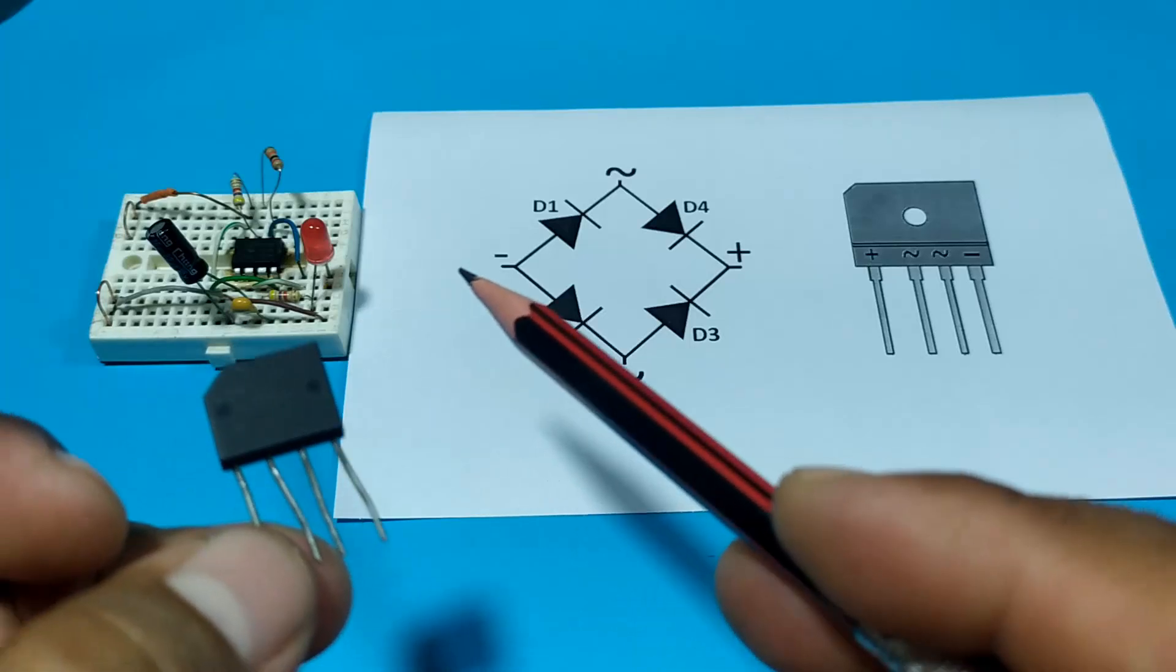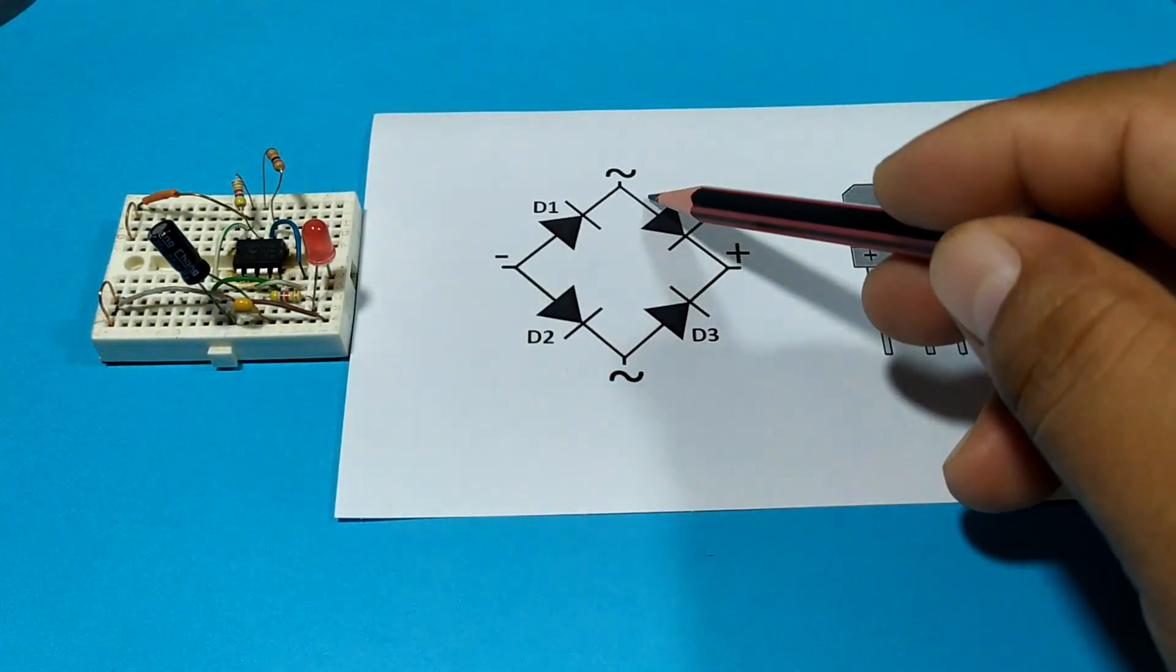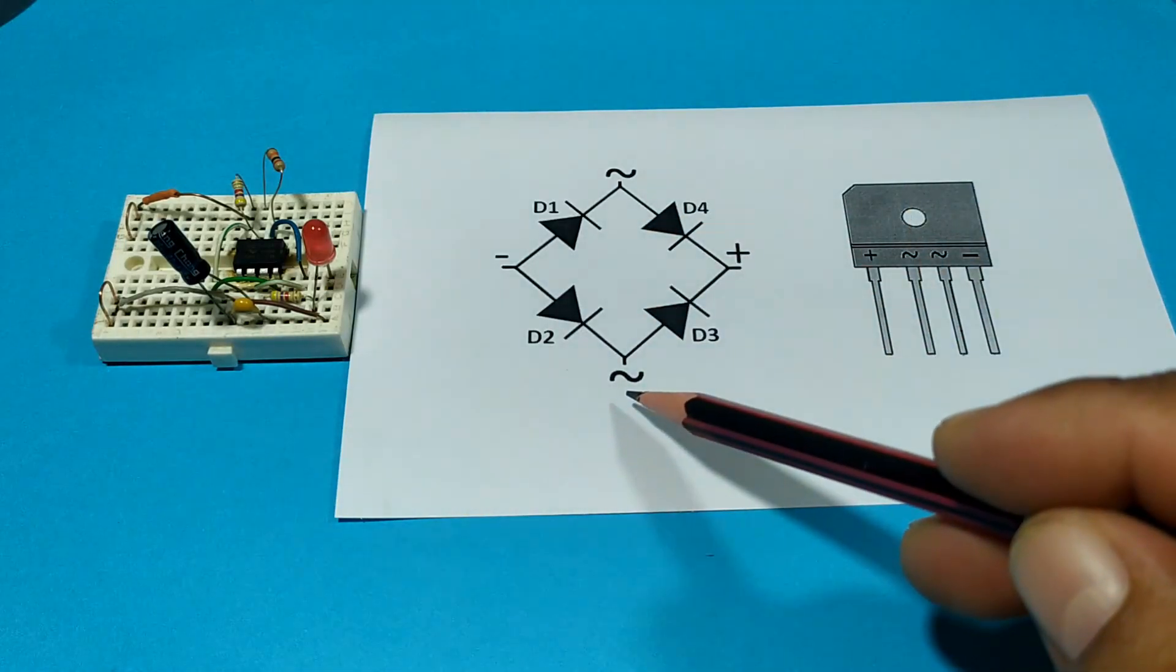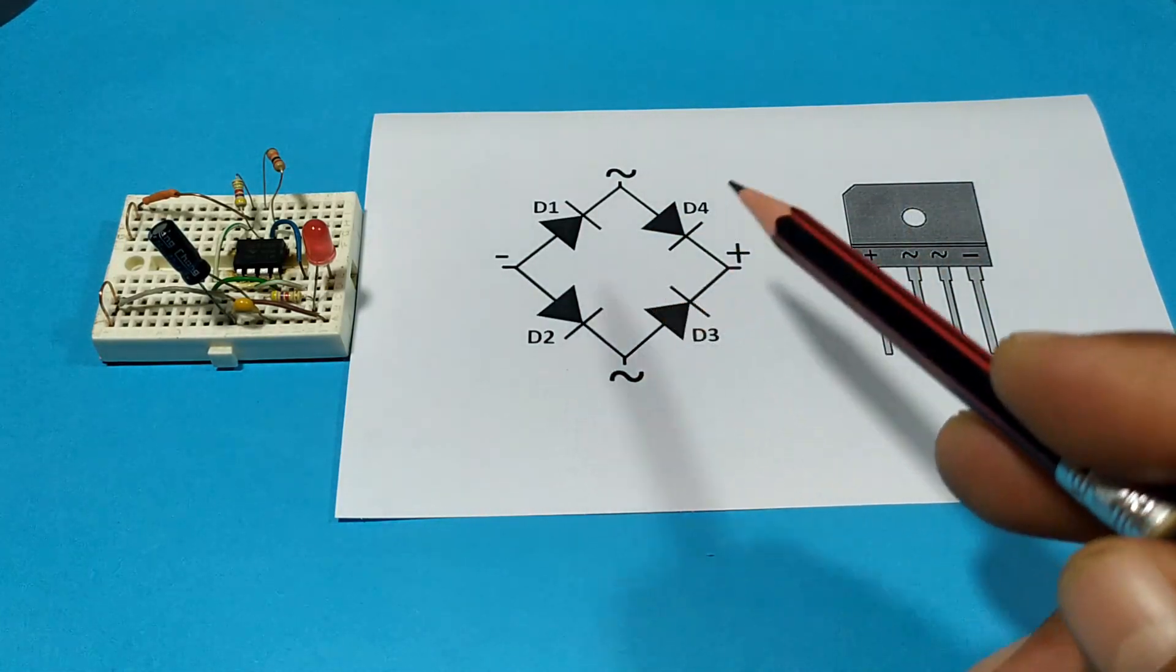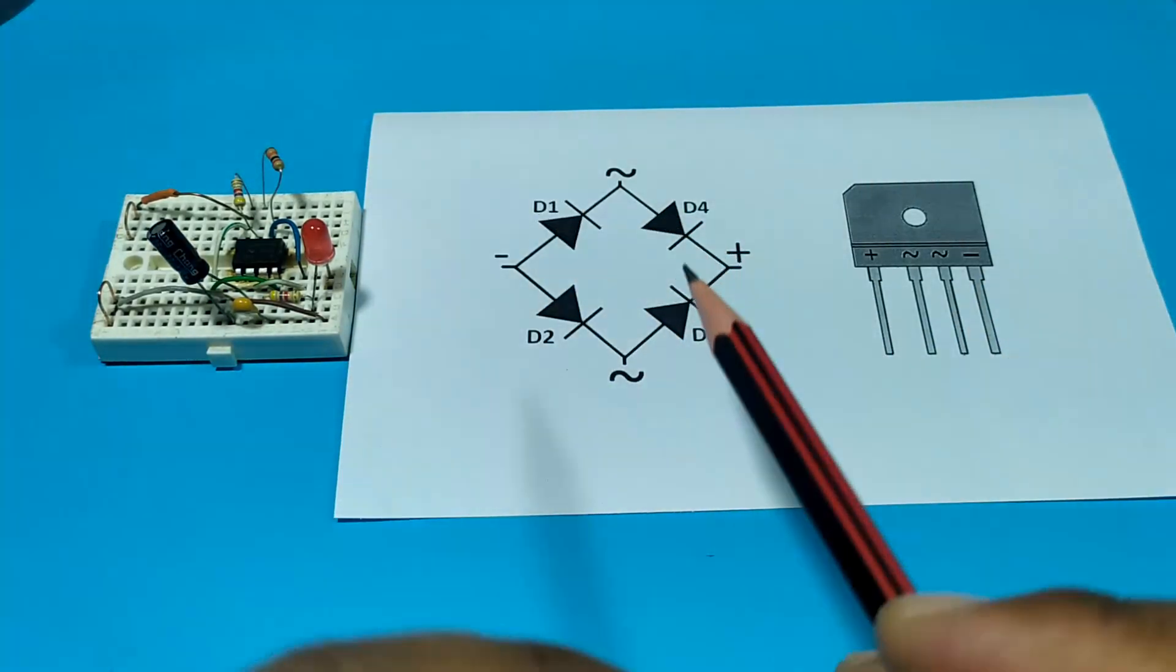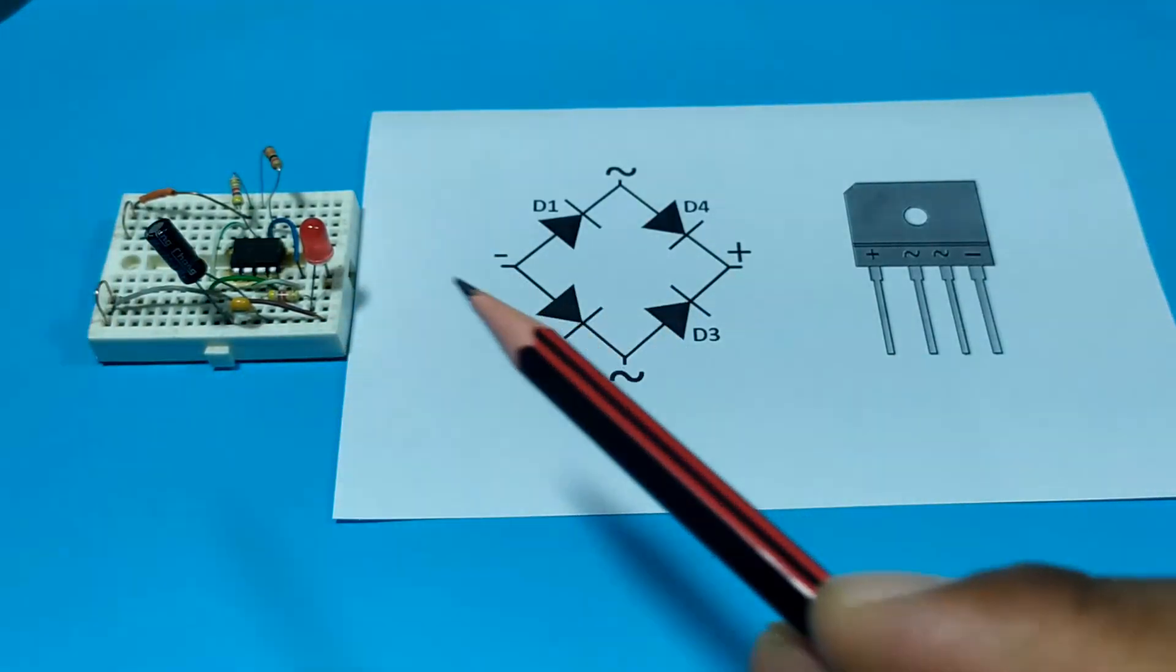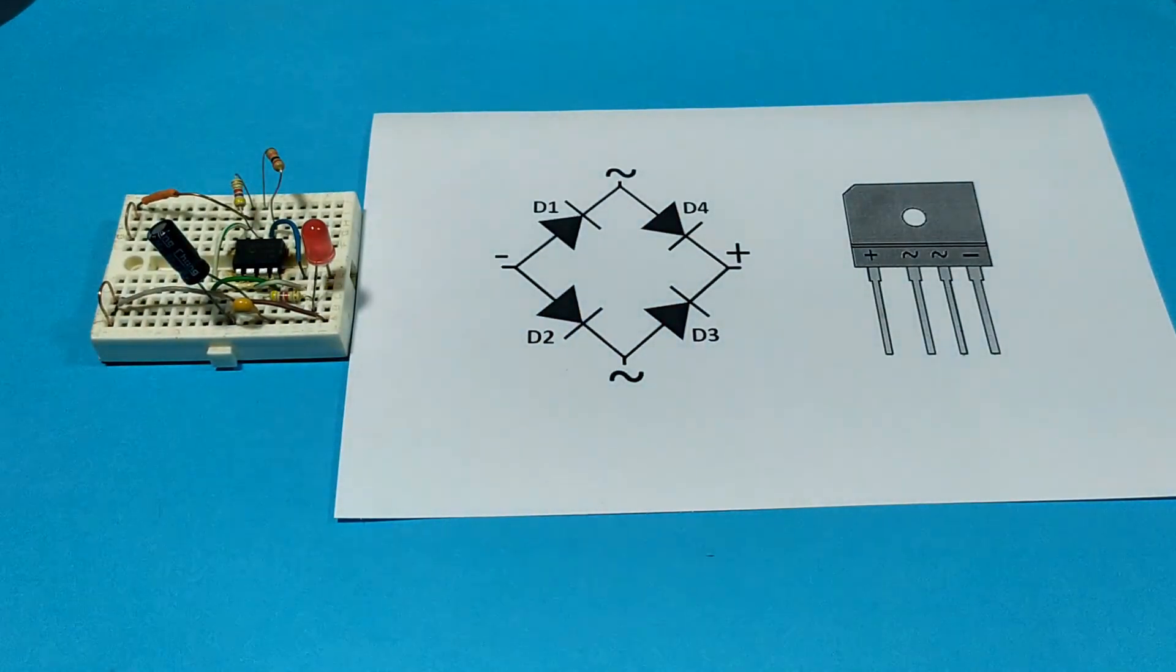Now we are going to connect this to the circuit in such a way that the positive input goes in here and the negative input goes in here. In such a way that we always have positive and negative at the output. I will explain to you how this is going to work later. In the meantime, let's make the connections to this in the circuit that we have.